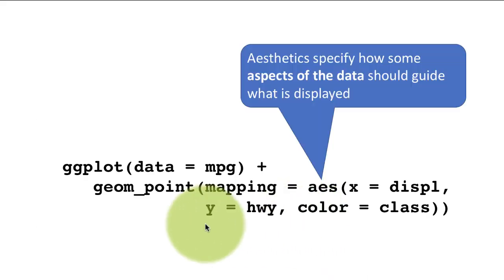So now notice that once again, aesthetics, again I'm just indicating to you, aesthetics specify how a certain aspect of the data will guide a certain aspect of the display or the plot. So we said x is displacement, y is highway. So we are saying use the displacement column for the x axis, the highway column for the y axis and the class column. Let it be used to determine the color of each point.